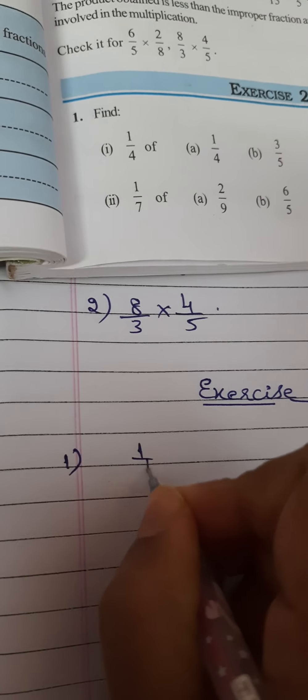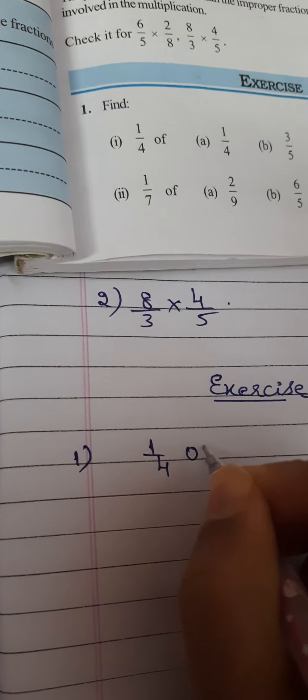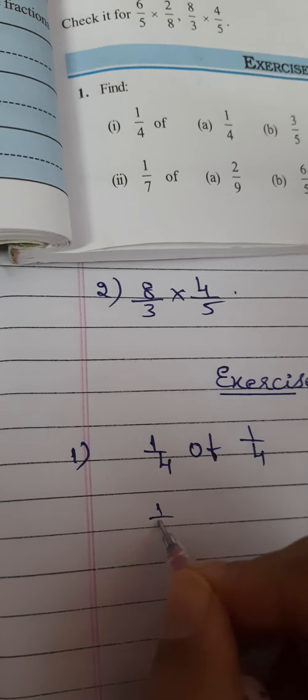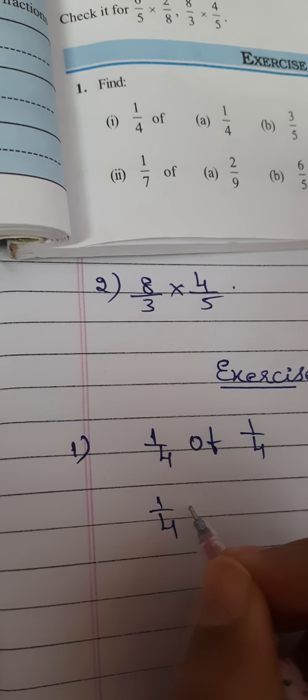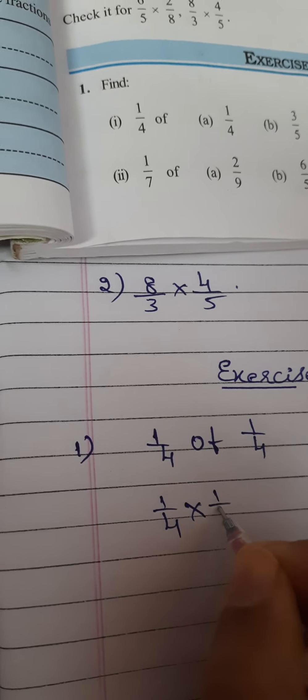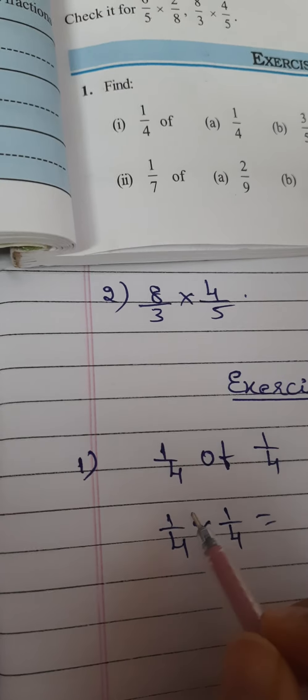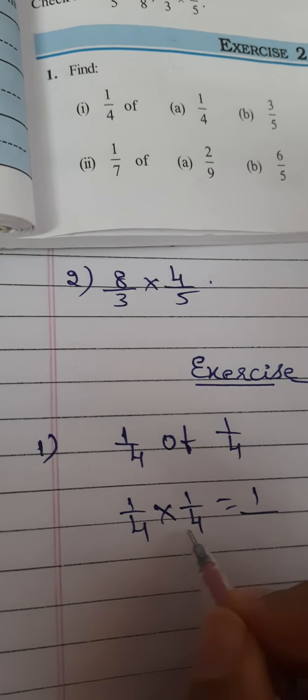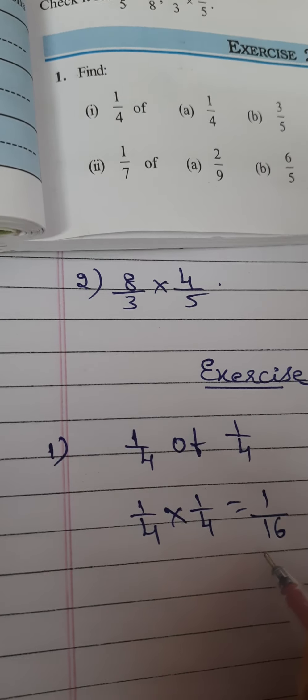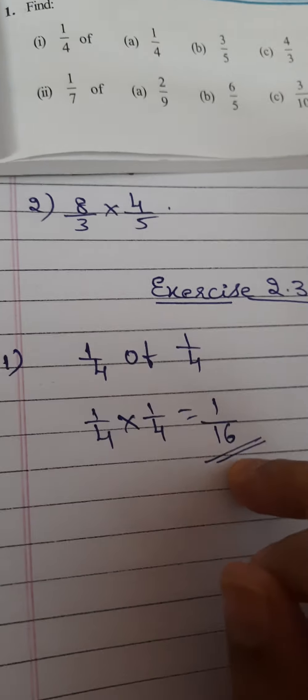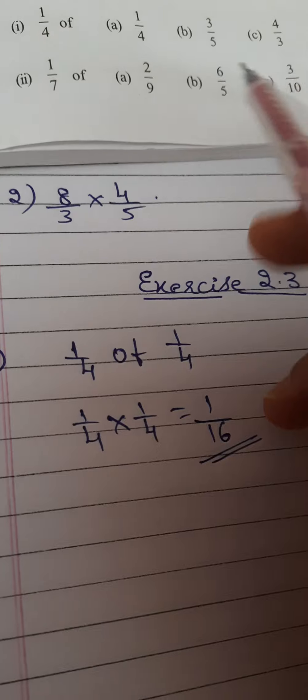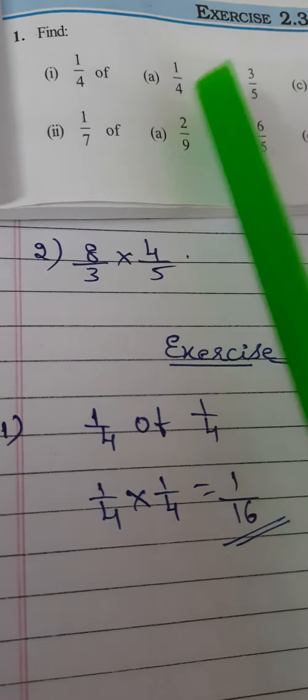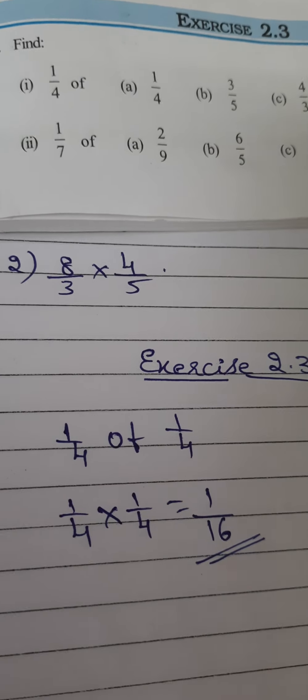1/4 of 1/4. I have told you, 'of' means what? Multiplication. 1/4 × 1/4, that is equal to 1 × 1, how much? 1. Divided by 4 × 4, how much? 16. So the answer is 1/16. It is so simple. Then you can solve the first main: 1/4 of 3/5 and 4/3.